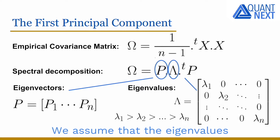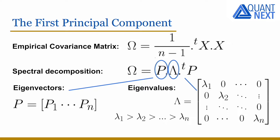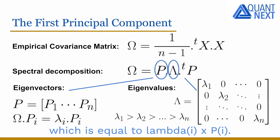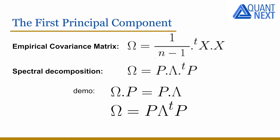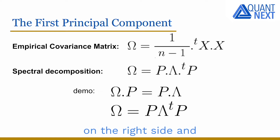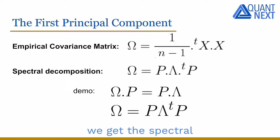We assume that the eigenvalues are sorted in decreasing order. So we have the product of omega and P_i which is equal to lambda_i times P_i. In matrix form, omega times P is equal to P times lambda, and by multiplying by the transpose of P on the right side and using the fact that P times its transpose equals the identity matrix, we get the spectral decomposition of omega.